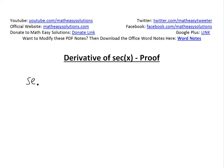Basically, secant x, or sec x, is just the reciprocal of cosine x, which means it's 1 over cos x.